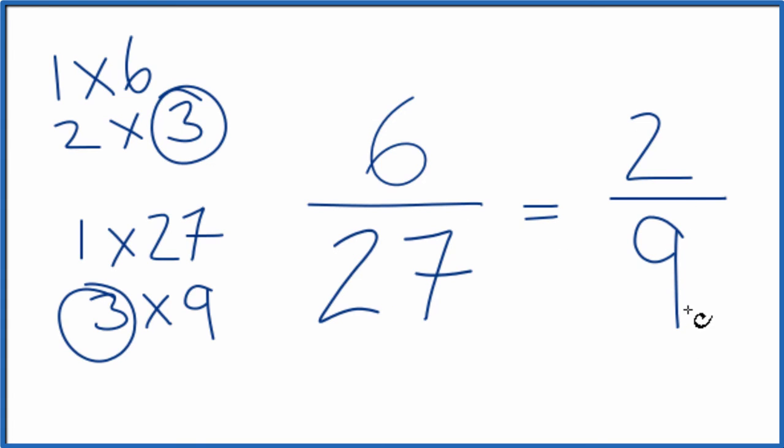You can't reduce this any further. Note that if you divide 6 by 27 and 2 by 9, you'll get the same number. They're equivalent fractions. We've just reduced 6/27 down to 2/9.